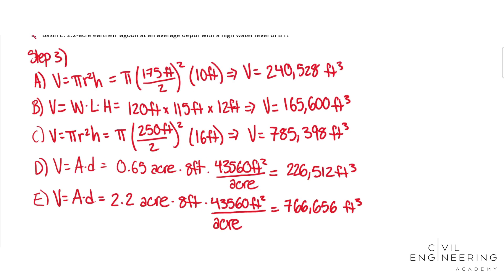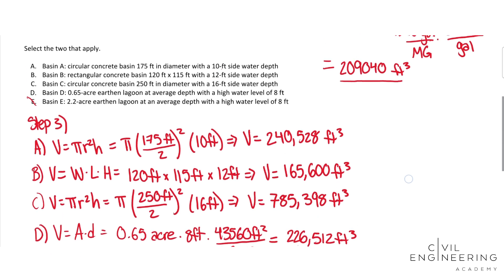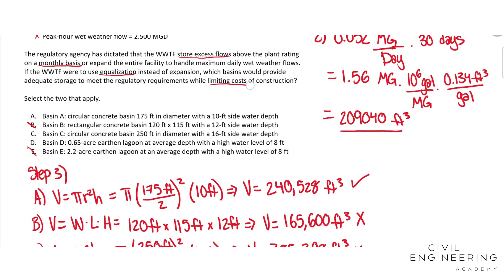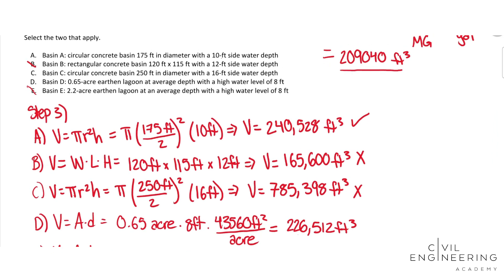So now that we have all of our volumes from our answer options, let's look at them one by one and see which ones are going to provide enough storage for our 209,040 feet cubed of water that we need to store. A: 245,528, that works. B: 165,600, that is too small. No. C: 785,398 feet cubed, that's way too big because keep in mind we want to limit cost of construction. So we don't want to build something that's about three times bigger.